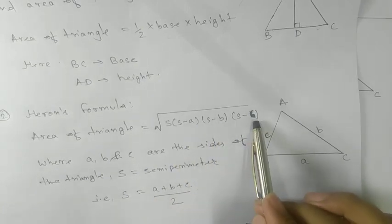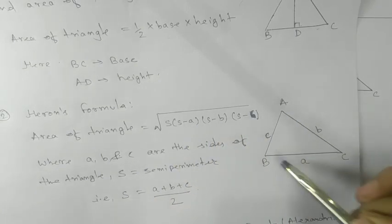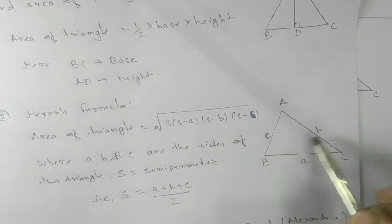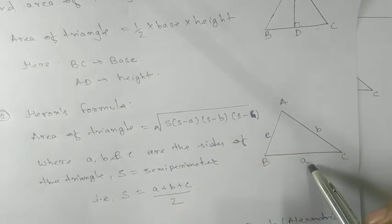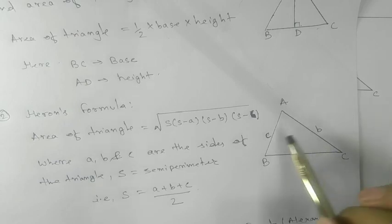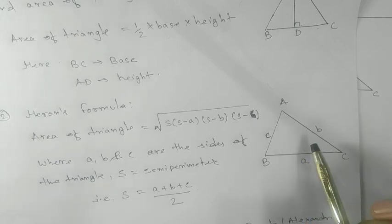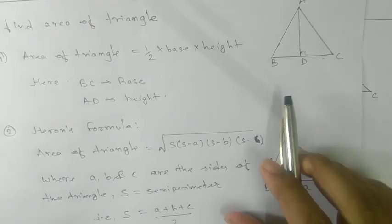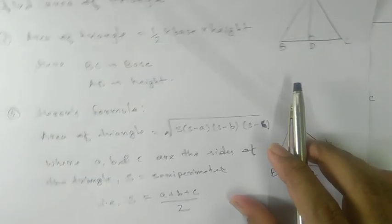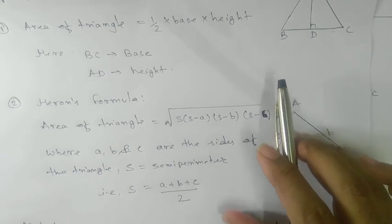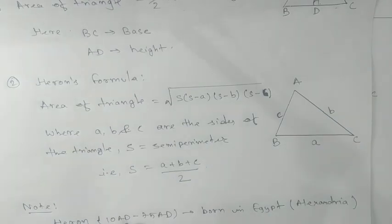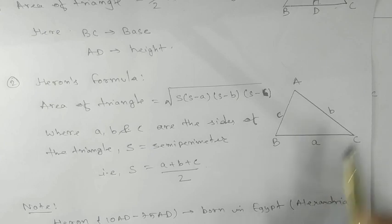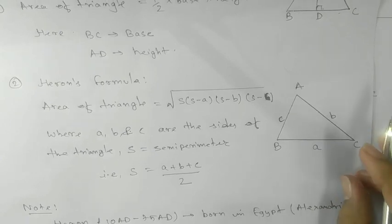What are A, B, C? A, B, C are the lengths of the sides of the triangle. This formula was given by Heron, who was born in Alexandria, Egypt.